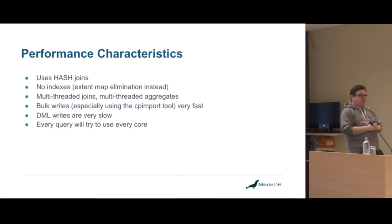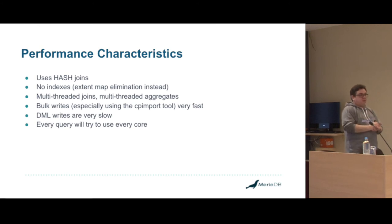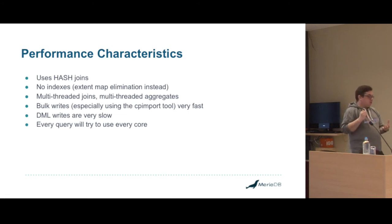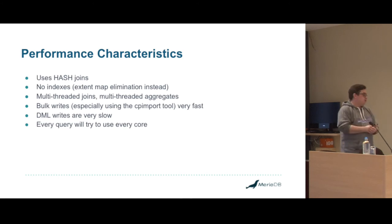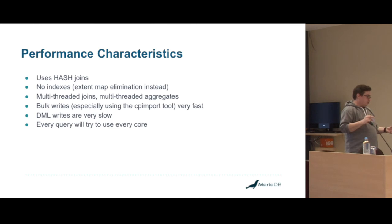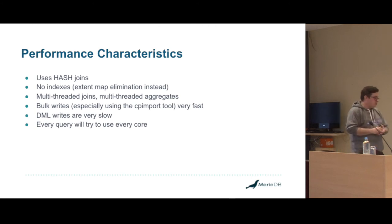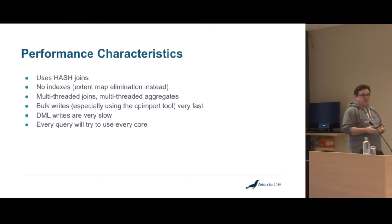We use hash joins, so it's great for equality joins but not so great if you're not doing equality joins. There are no indexes in ColumnStore whatsoever — if you try to create a primary key, you'll get an error. Extent map elimination is our equivalent of an index. Since you've got these column files and extent files, they're essentially our indexes in themselves. We support multi-threaded joins and multi-threaded aggregates — people keep saying it really needs multi-threading, but we already have it.